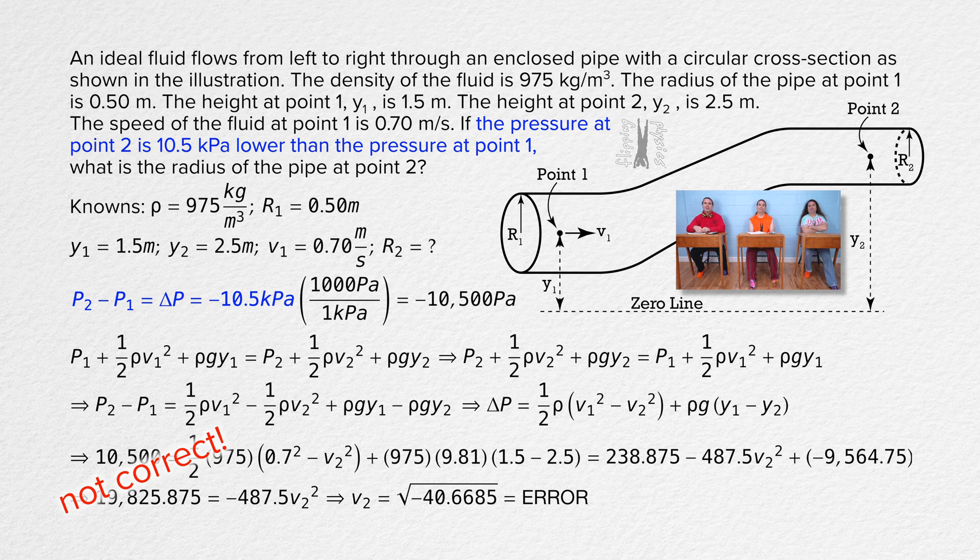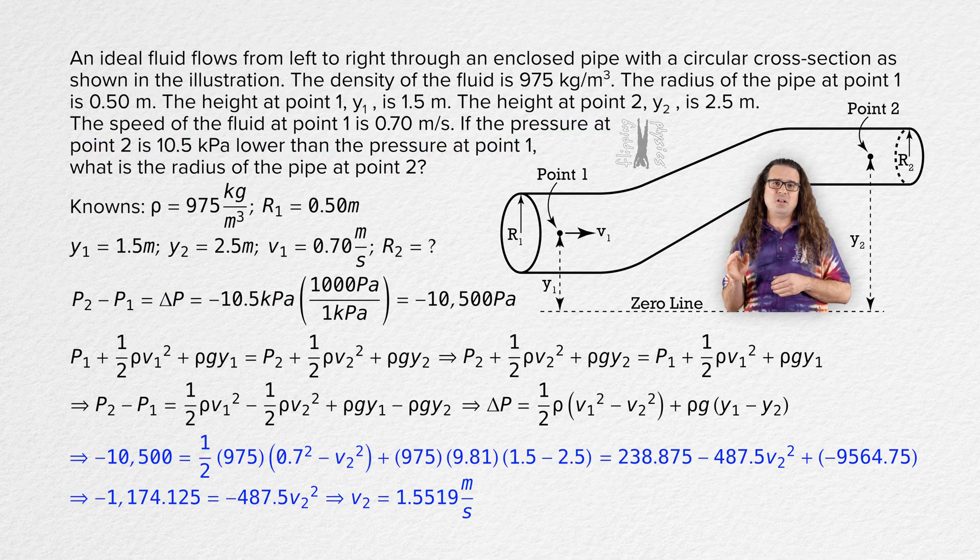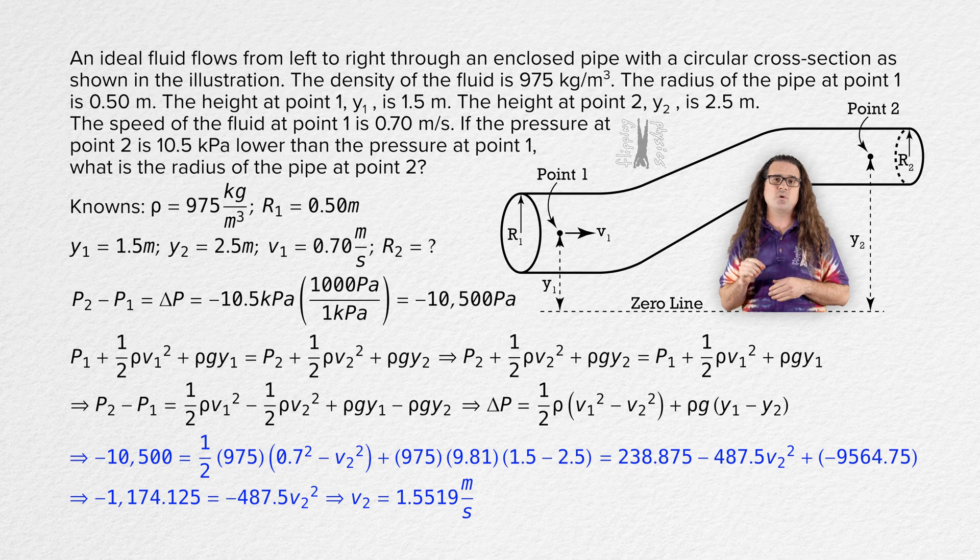Yeah. Sorry. That was my fault. Eh. No worries. We all make mistakes. And neither of us caught it. Okay. Thanks. I agree. And when we fix that small error throughout our entire solution, we end up getting that the speed at point 2 equals 1.5519 meters per second.